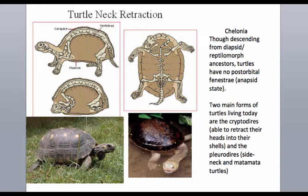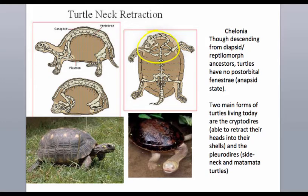The most basal of the archosaurs are the anapsids. Looking at the skull, there is no hole besides the ocular orbit — these are anapsid organisms, presumably a derived state from the diapsid lineage. In modern turtles there are two different forms: the Cryptodira, which pull their necks back into their shells by creating an S-shaped arch in their neck; and on the right the Pleurodira, or side-necked turtles, which have a groove on the side of their carapace to protect their heads rather than pulling them back. Mata-mata turtles are also part of the Pleurodira.